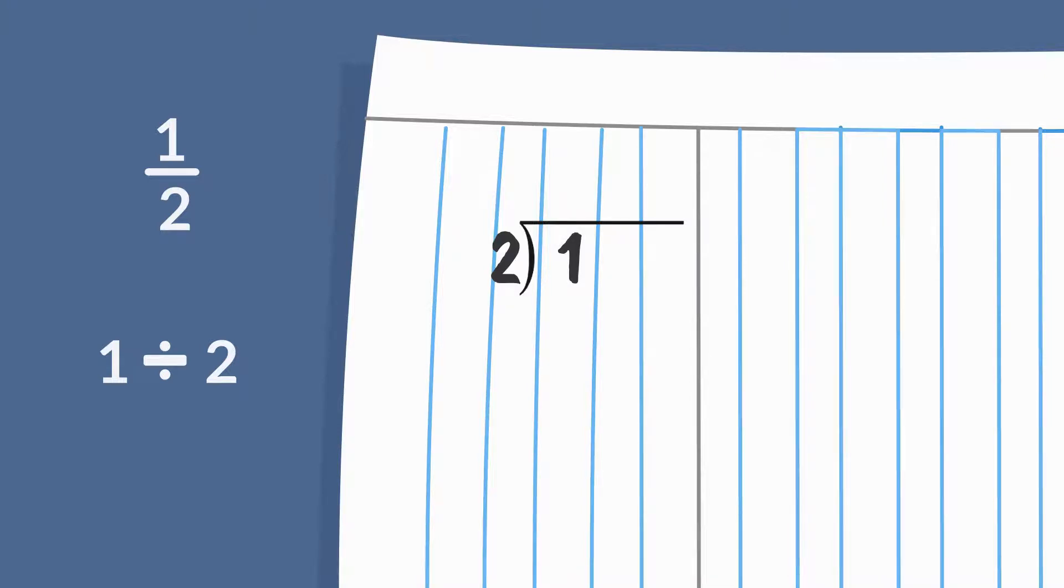How many times does two go into one? None! You can write a zero over the one to start your quotient, or just leave that part blank. Now write a decimal point after the one on the blue line and transfer it up to the same place in the quotient, right on the blue line. The number one has no tenths and no hundredths, so you can fill in two zeros to the right of the number one, inside the division bracket.